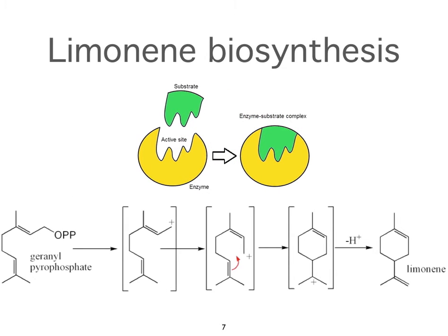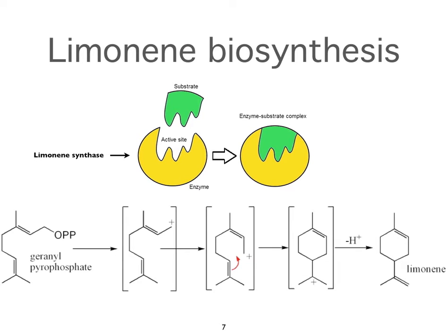This is what happens when geranyl diphosphate, or pyrophosphate, is transformed into limonene — it's a process that goes through several steps. This represents the enzyme, and this is the substrate — the stuff that's going to be changed, the geranyl pyrophosphate. The enzyme has a certain shape, so it can only change certain molecules into certain other molecules. This enzyme is called limonene synthase. These secretory cells have hundreds of enzymes in them, all doing different jobs.